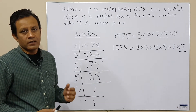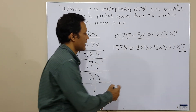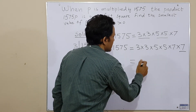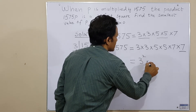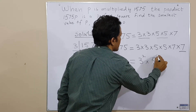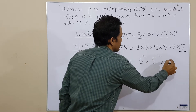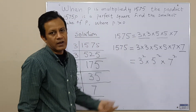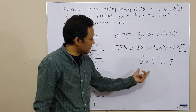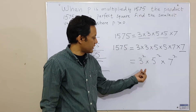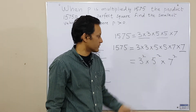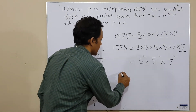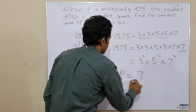So 7 is the smallest possible value that makes 1575 a perfect square. Writing in index notation: the pair of 3s becomes 3², the pair of 5s becomes 5², and the pair of 7s becomes 7². Every prime factor is now a perfect square because each is multiplied by itself. Therefore the smallest possible value of p is 7.